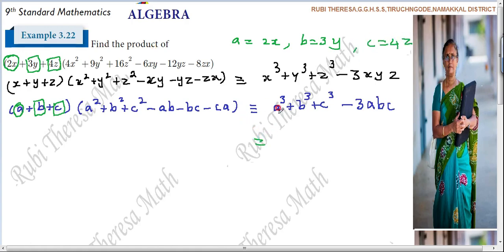So, what is the answer you will write? a³. What is a? 2x. So, (2x)³ + b³. What is b? Very good. (3y)³. Along with me, you try to say the answer.